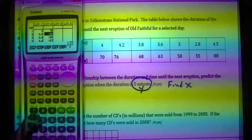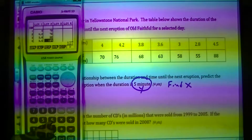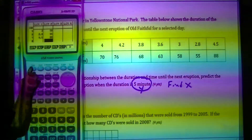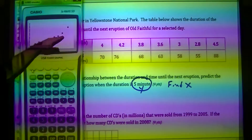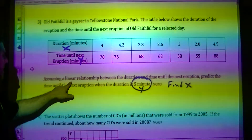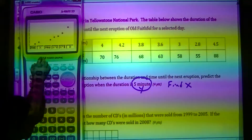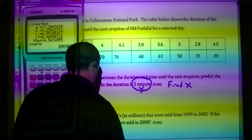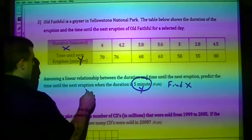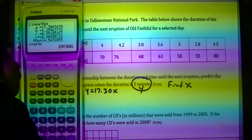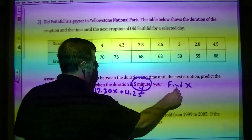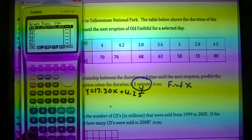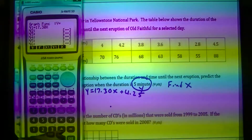The Y values are: 70, 76, 68, 63, 58, 55, 88. After graphing, it sort of looks like inverse, but since they tell us linear, we assume it's a line. I get Y equals 17.30X plus 4.25. Writing that down for reference, I go back into graph and type in 17.30X plus 4.25.